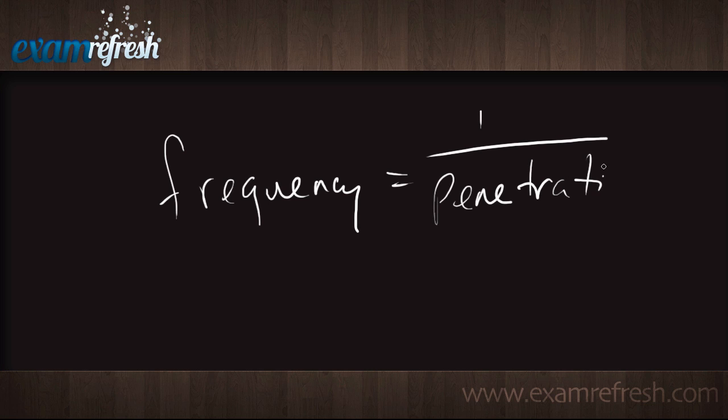Another example that I like to use is the frequency of the machine, or the transducer, is equal to one over penetration. I like this one because it's fairly easy to actually logically think this one out. Let's say, for example, we're going to be imaging a thyroid gland. Do you need a lot of penetration? No.